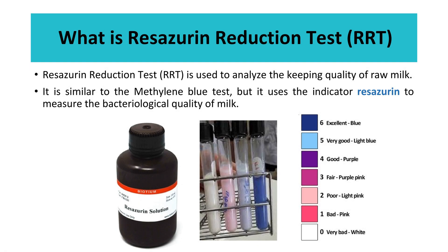Resazurin reduction test, or RRT, is used to analyze the keeping quality of raw milk. It is similar to the methylene blue test, but it uses the indicator resazurin to measure the bacteriological quality of milk.